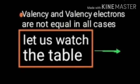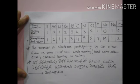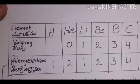Let us watch the table. In this table, we observe the valency and valency electrons of each atom. From hydrogen to carbon, valency and valency electrons are equal.